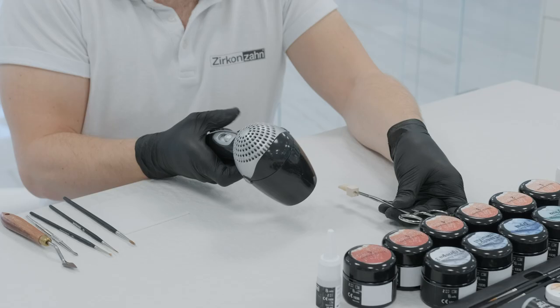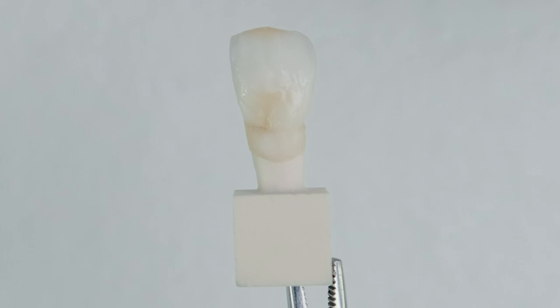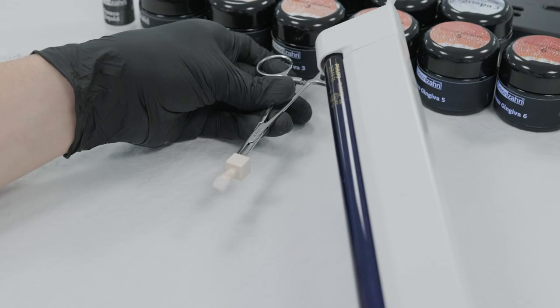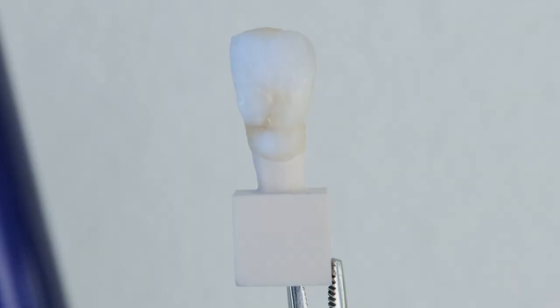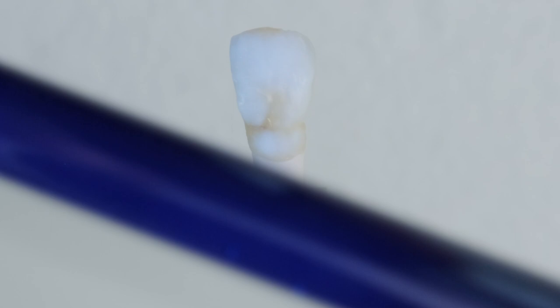We suggest to dry the fresco enamel pastes with a hairdryer in order to increase their modeling properties and better work on the structure. To check if the fluorescent paste has been uniformly applied, we recommend putting the structure under a UV lamp before the final firing.